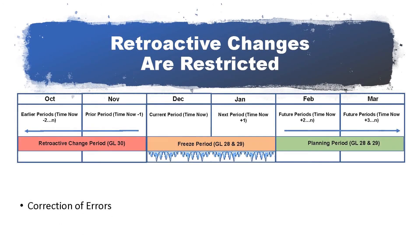Questions often arise regarding the allowability to make changes to data in the periods preceding the current month — in other words, true retroactive changes. As mentioned before, any changes to the data in prior periods are recorded in the EVM reports as current period changes, and discussed in Format 5. These changes are generally limited to correction of errors, including accruals, reversals, and time card adjustments.